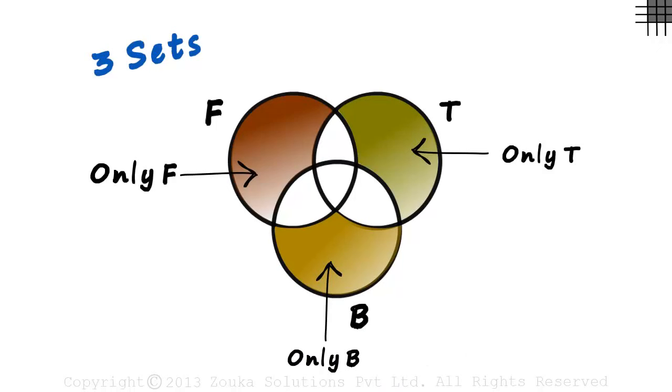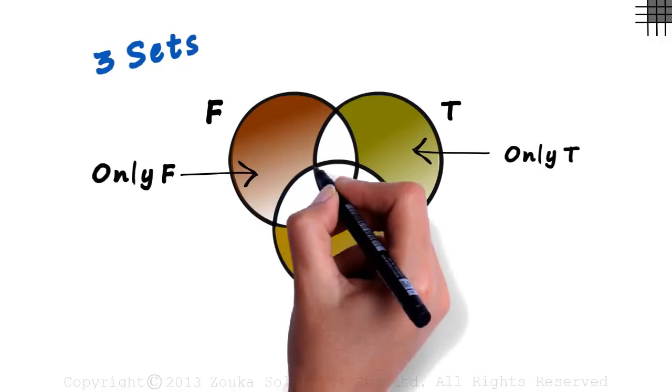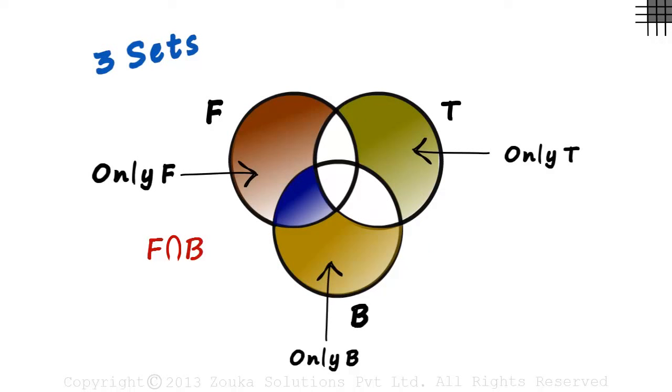Now the next one's a very tricky question. Look at this region. Is it F intersection B? That's not correct. Don't worry if you thought this is the answer.